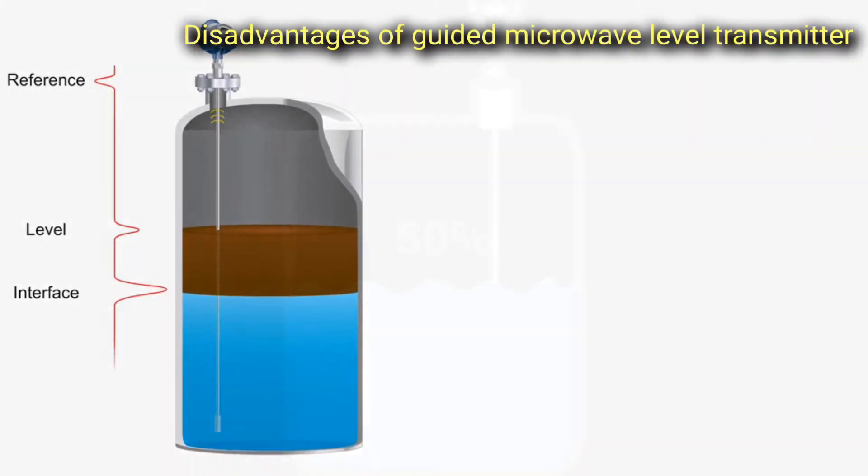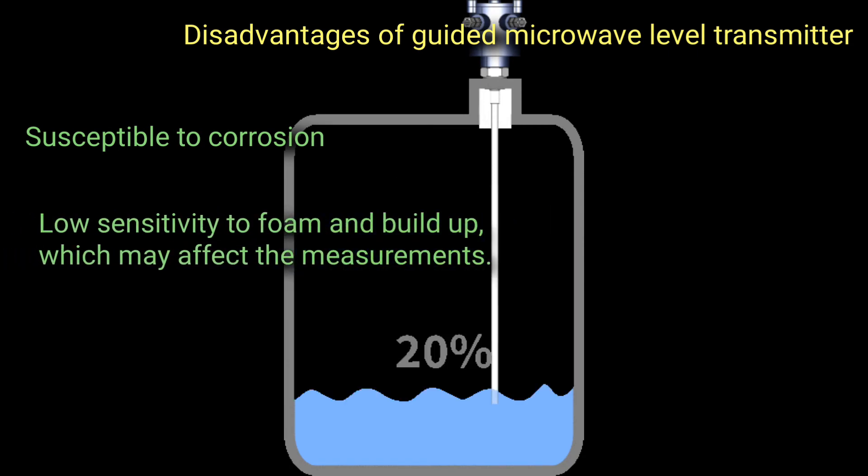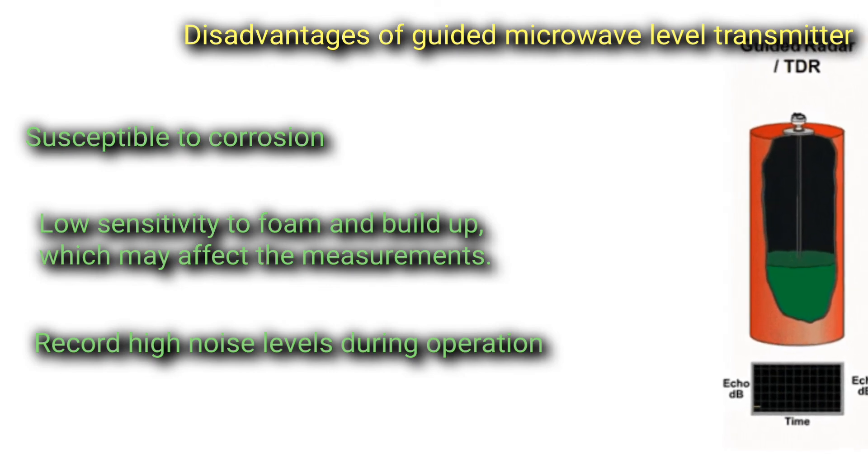Disadvantages of guided microwave level transmitter: Susceptible to corrosion. Low sensitivity to foam and build-up which may affect the measurements. Record high noise levels during operations.